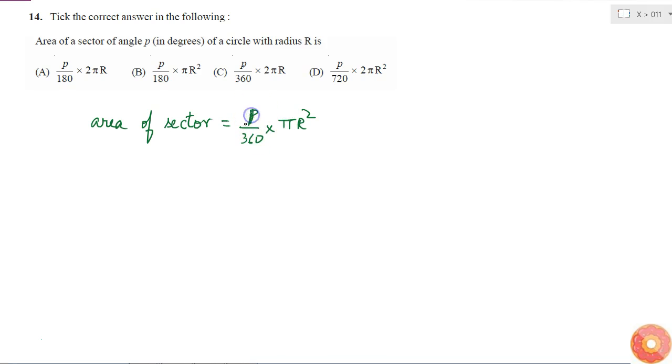if I consider the entire circle, then it will be 360 by 360 into pi R square which is equal to pi R square. And if I consider semi-circle, then P will be 180, then again it will be satisfied and so on. So if I go on dividing the circle, then for any value of P I can get the area of the sector.